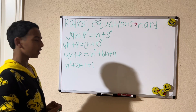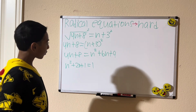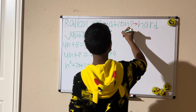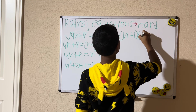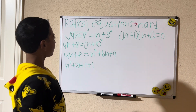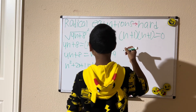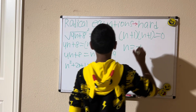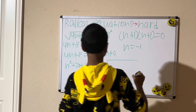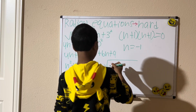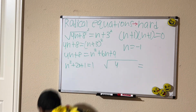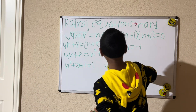So n squared plus 2n plus 1 equals zero. Two numbers that multiply to one and add to two are one and one, so we factor as n plus 1 times n plus 1 equals zero. That gives us n equals negative one. Let's plug in: we get the square root of negative four plus eight, which is the square root of four, and that equals two. And n plus 3 equals negative one plus 3 equals 2. Yes — negative one is our solution.